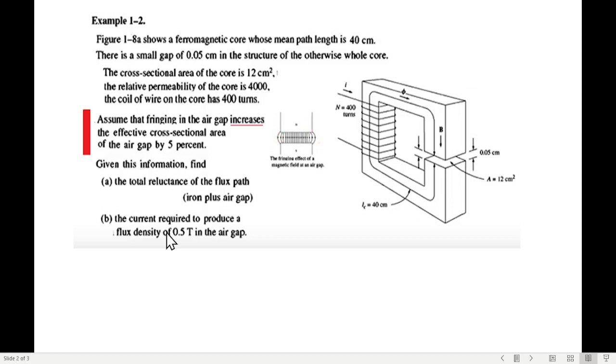This is the whole question. This part is bothering people. Assume that the fringing in the air gap increases the effective cross sectional area of the air gap by 5%. So this is the cross sectional area, this portion actually, and this is the air gap.